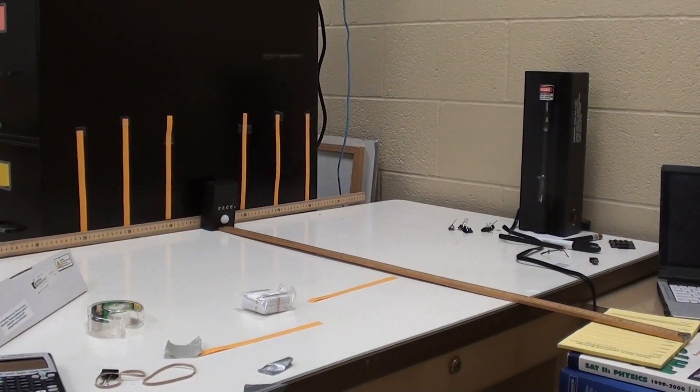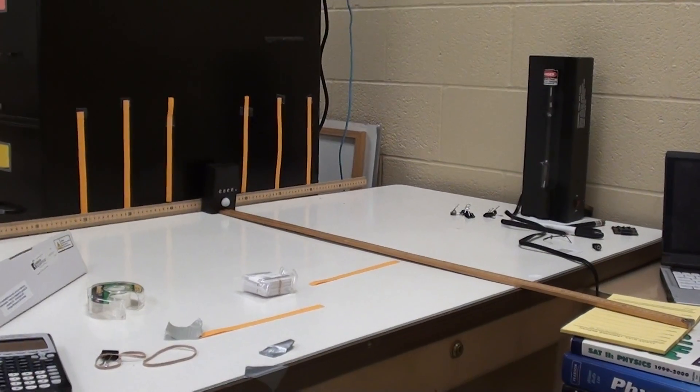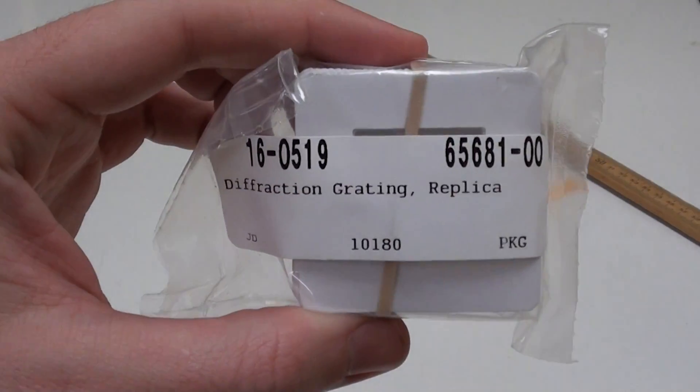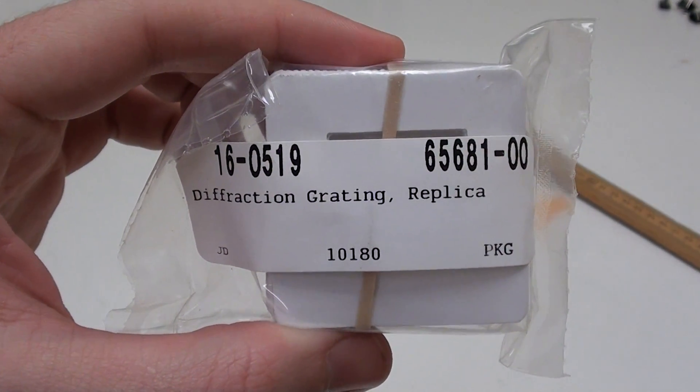And one of the neat things you can do is actually put it in front of a camera and then anybody can see it. So what I have here is I have some diffraction gratings. I happen to get these from Ward Scientific although you can get them lots of places.